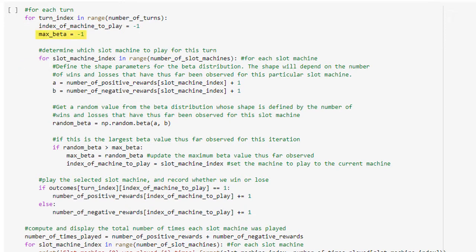We begin each turn by setting the max beta variable to negative 1. This variable will be used to keep track of the largest beta value that we observe for this turn. Next, for each slot machine, we draw a random value from the slot machine's beta distribution, with the shape of the distribution being defined by the number of past wins and losses that we've had when we played that machine. We then check to see whether the slot machine's beta value is the largest that we've thus far observed for the current round. And if so, we set the value of the index of machine to play variable to the index of the current slot machine. Thus, after we have drawn and examined the beta values for all six slot machines, the index of the machine that had the largest beta value for this turn will be stored in the index of machine to play variable.